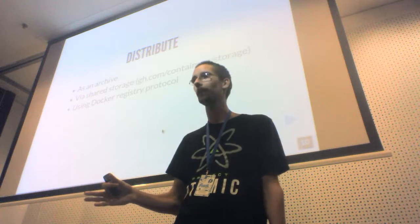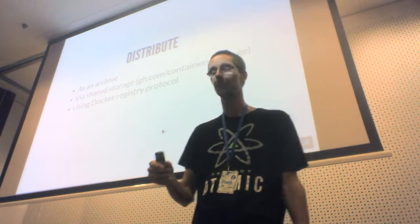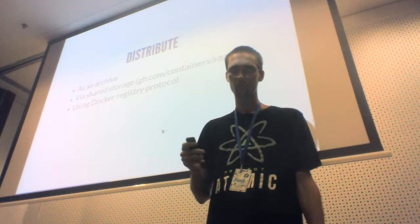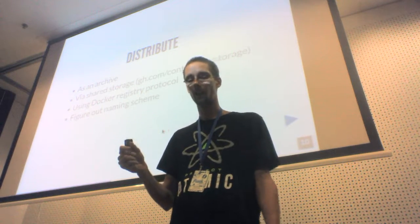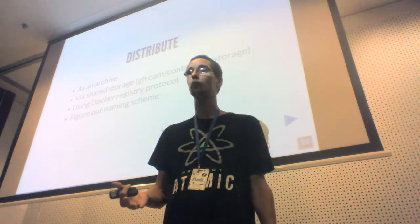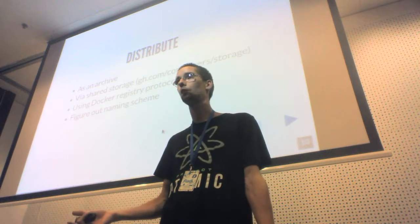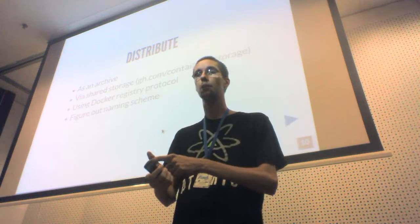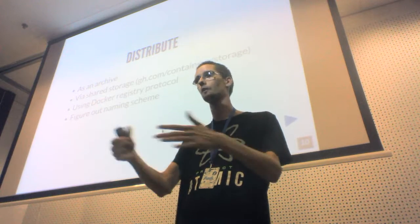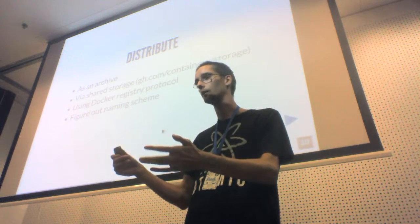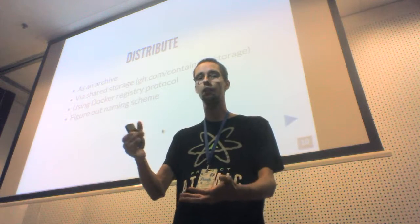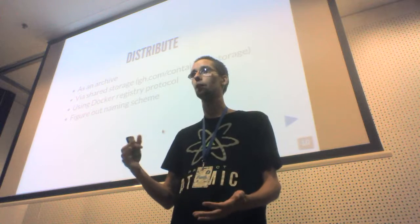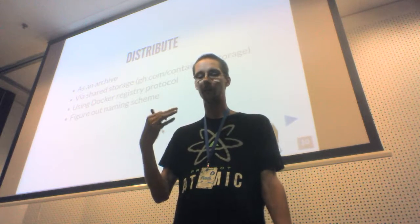When you start distributing images with the Docker registry, you need to figure out a naming scheme. I advise using semantic versioning so you know whether an image is an alpha, QA, or production image — and if something fails, you know which version you were using. You need to spend time figuring out the guidelines. After that, we can finally deploy the application — but this is actually the most complex part.